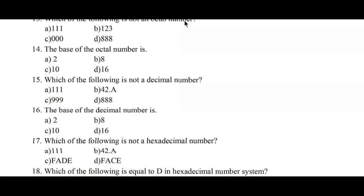Question number thirteen: which of the following is not an octal number? Options: A) 111, B) 123, C) 000, D) 888. In the octal number system the range is 0 to 7. Option D, 888, contains the digit 8 which does not lie between 0 and 7, hence option D is not an octal number.